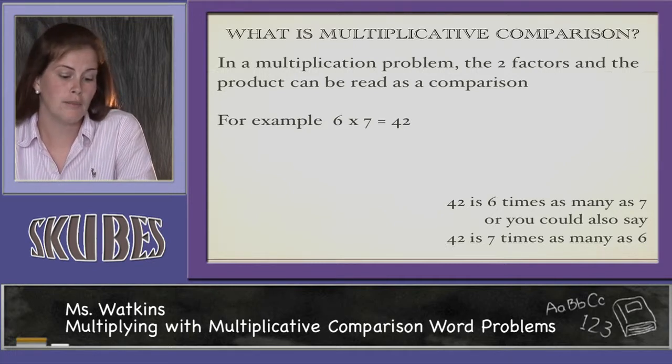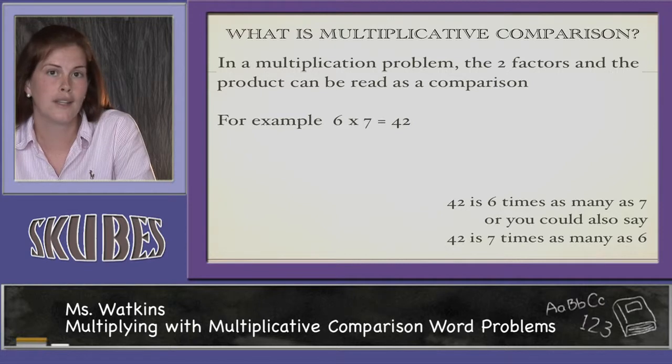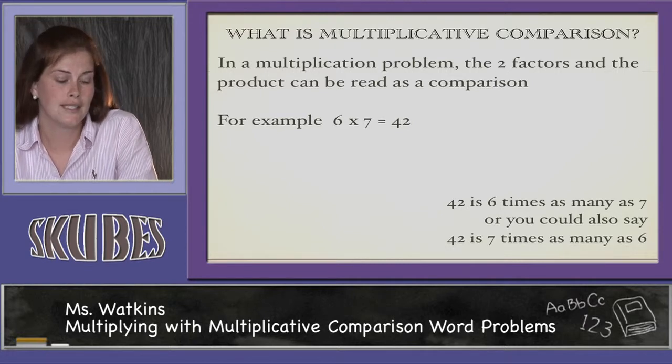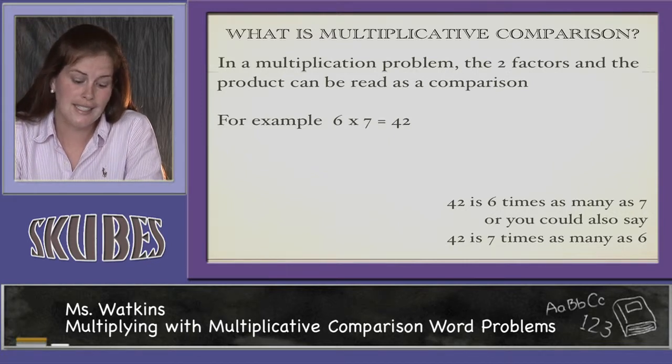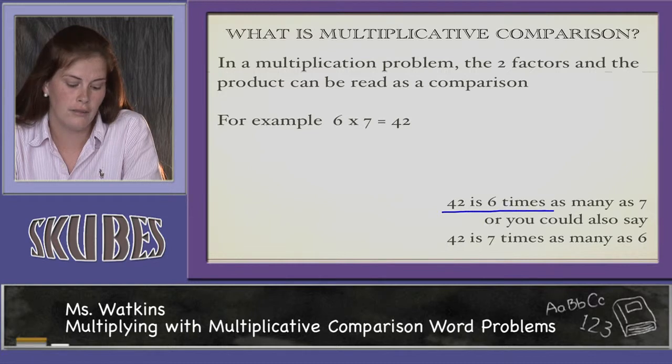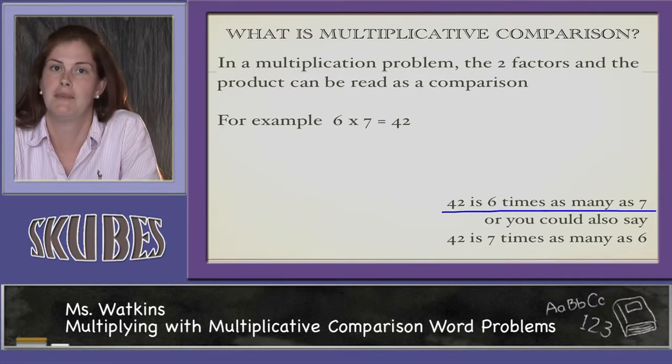In a multiplication problem, the two factors and the product can be read as a comparison. For example, we know 6 times 7 equals 42. To read this as a comparison, we could say 42 is 6 times as many as 7, or we could also say 42 is 7 times as many as 6.